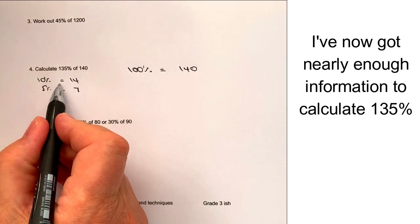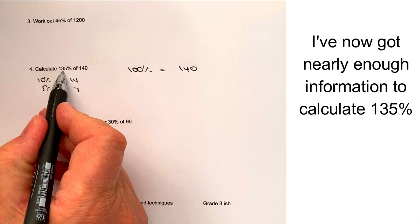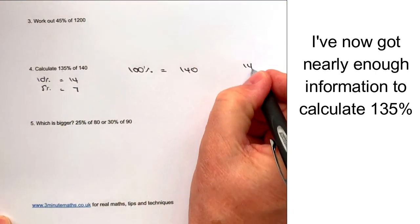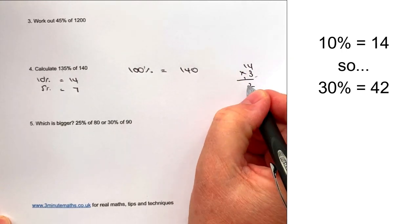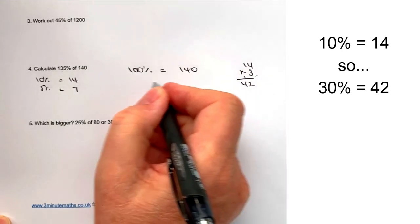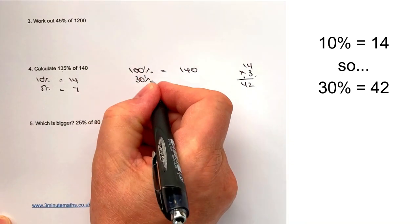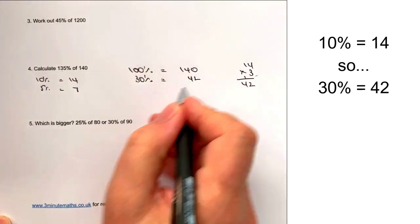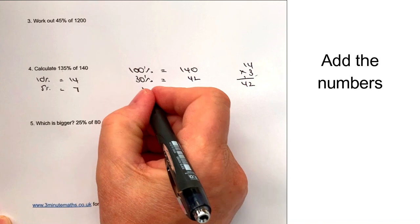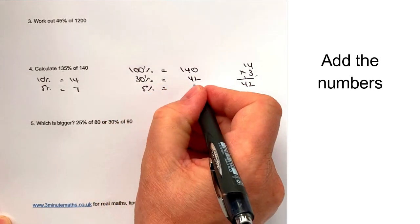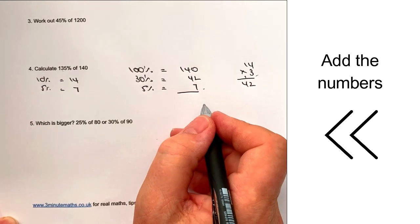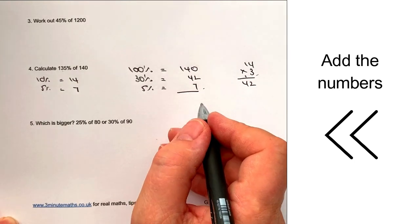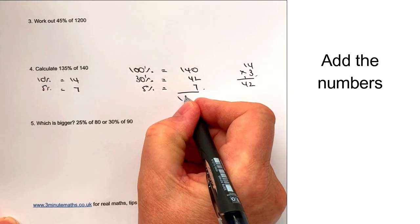10% is 14, but I want 30%, so if I multiply 14 times 3, that's going to give me 30%, which is 42. So 30% equals 42. And then finally I've got 5%, which equals 7. If I add all of those together, I'm going to get a grand total of 189.